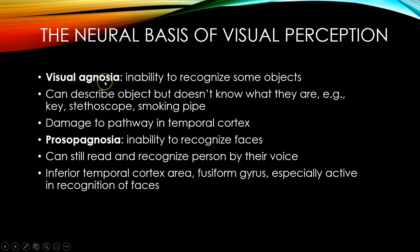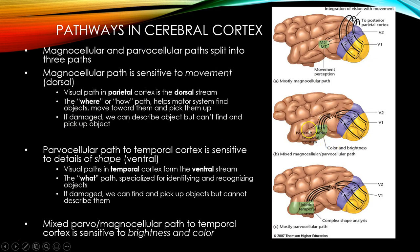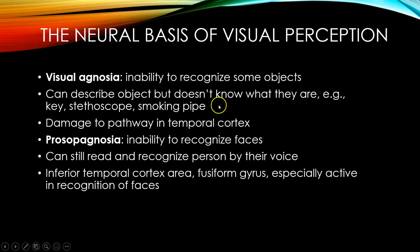Visual agnosia is the inability to recognize objects. People can describe the object — if you show them a key, they'll say it's shiny, it's silver, it looks bumpy — but they can't recognize it. They can describe the object but they can't recognize it. Agnosia basically means 'not knowing.' Visual agnosia is not knowing something from your visual system, and this happens after damage to the pathway that goes to the temporal cortex — the what pathway.